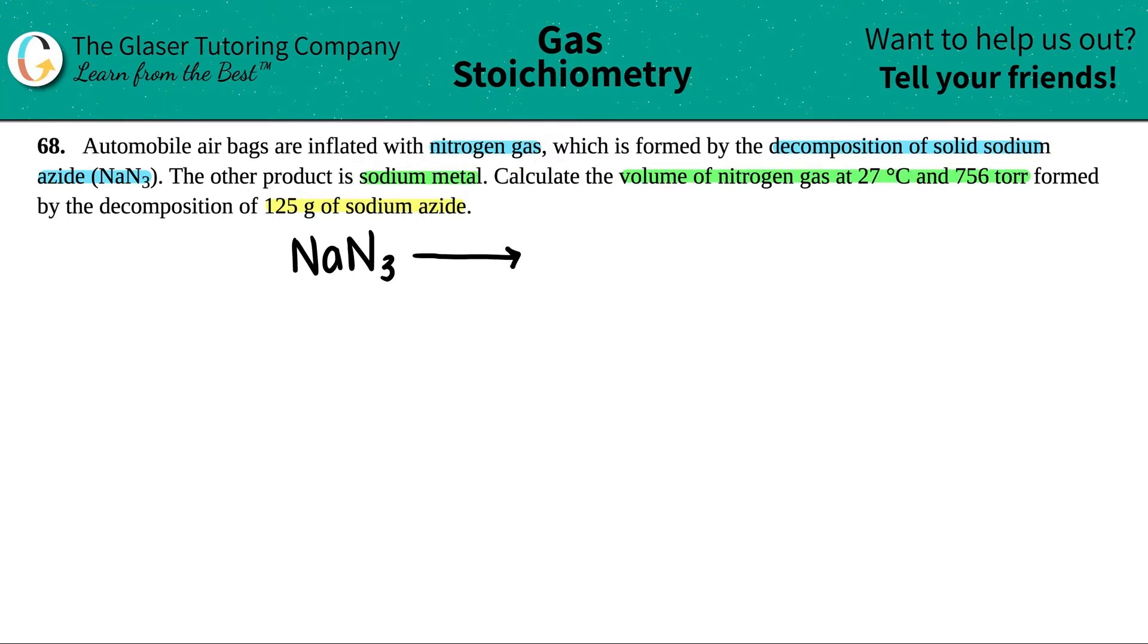So I have N2. Does it matter that it's a gas? No. And then plus the other one was sodium metal. Now remember, sodium is not a diatomic, so we have to just say Na. And that's how I knew to write N2 because nitrogen is one of the diatomics. You have to memorize your diatomics. So now here is what I got: NaN3 decomposing into N2 plus Na.